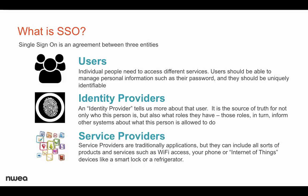The identity provider, or the IDP, is the place that takes that information and holds on to it really tight and securely, and adds additional information about your identity — things like organizational information, where you work, additional security roles, things you get to do. That combination of user information and IDP information is then securely passed along to a service provider.